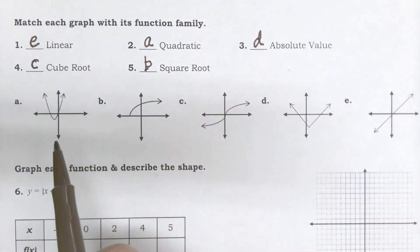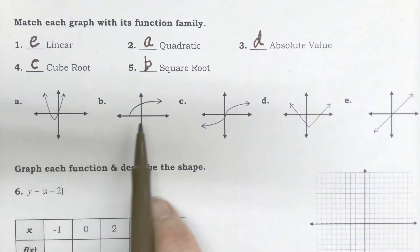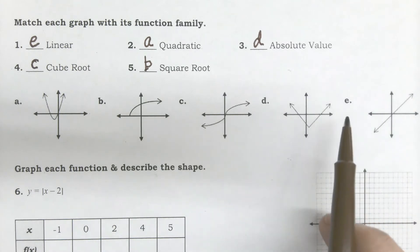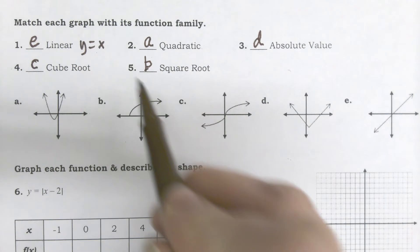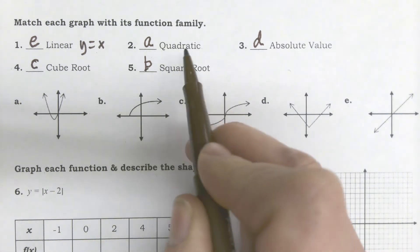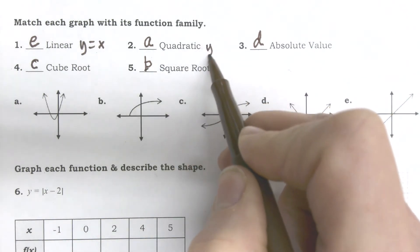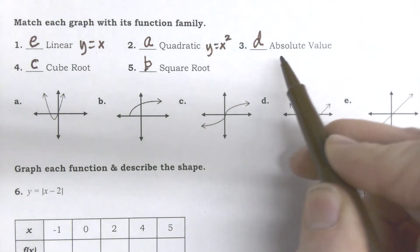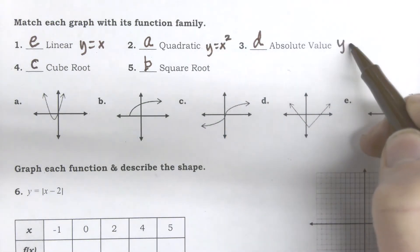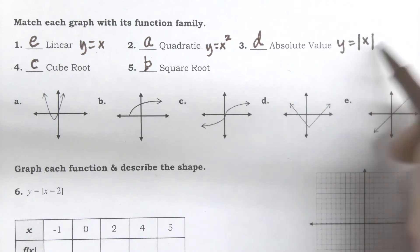So, keep in mind, again, when you're working through your function families, if you change, a linear comes in the form of Y equals X. Quadratic comes in the form of Y equals X squared. Absolute value comes in the form of Y equals absolute X.